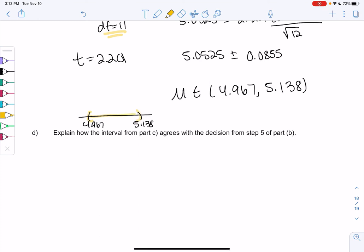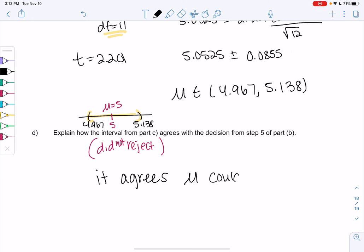How does this agree with our hypothesis? We did not reject that the mean could be 5. And that agrees, right? Our interval tells us that 5 is still possible because it's within the interval. We don't know that μ is equal to 5, but 5 is still a reasonable possibility. μ could be 5 if μ is in the interval 4.967 to 5.138. We don't have enough evidence to prove it's not 5, basically.